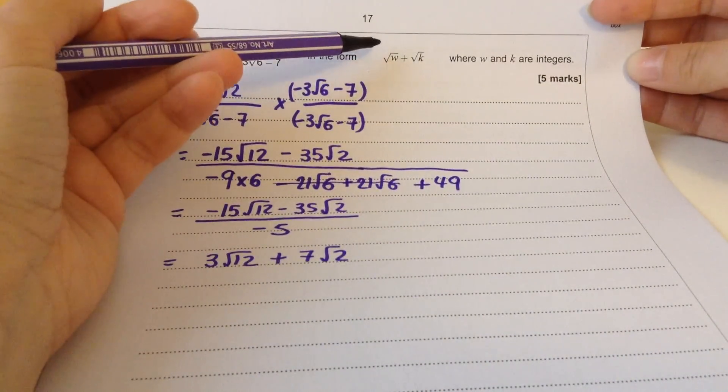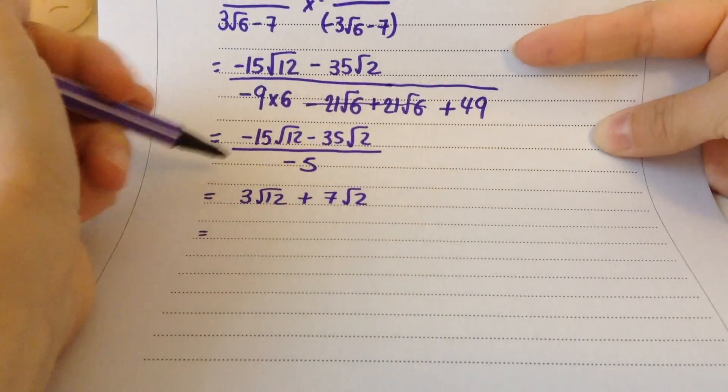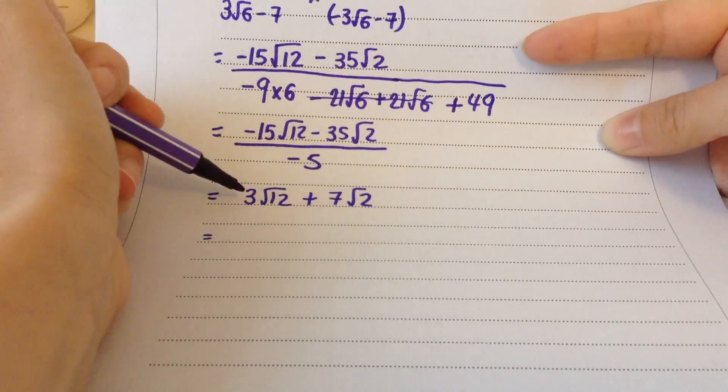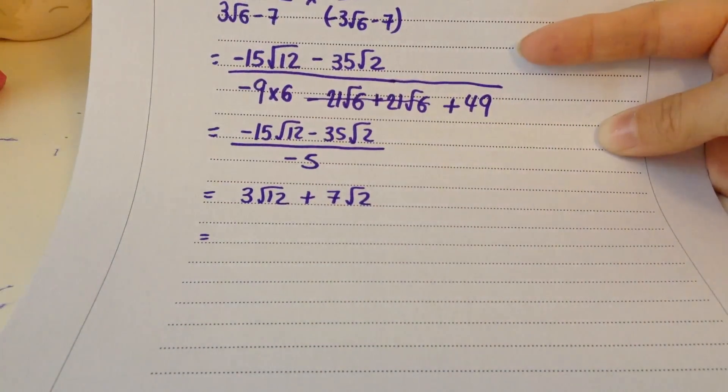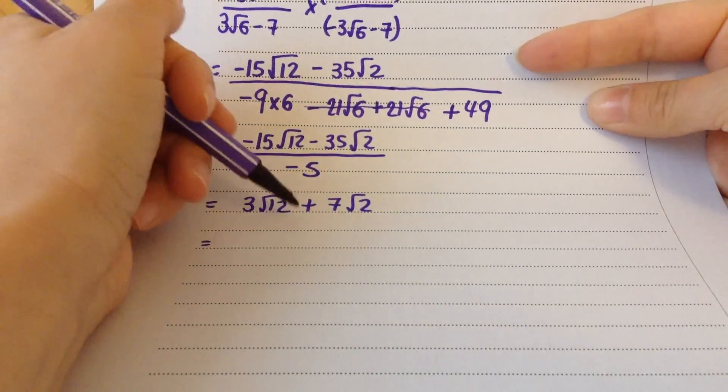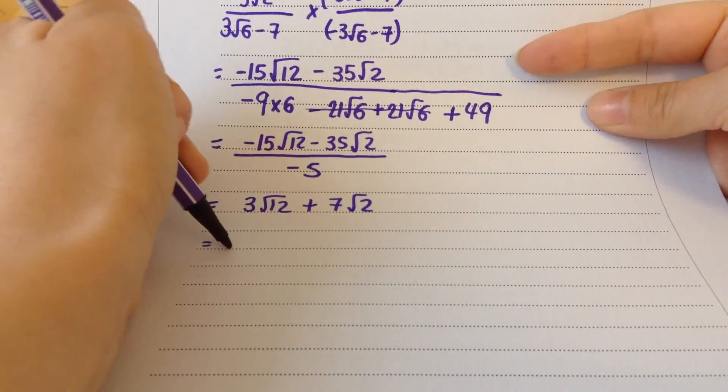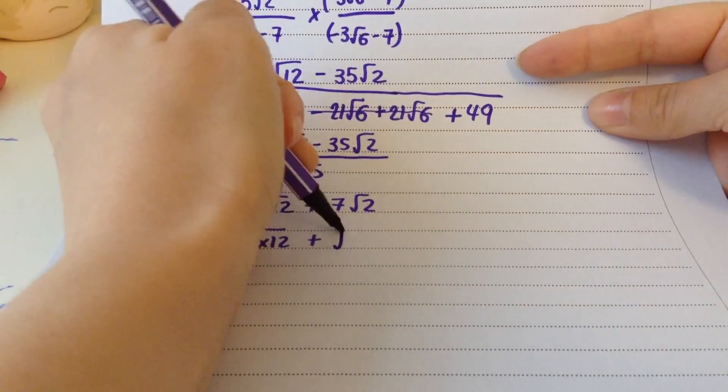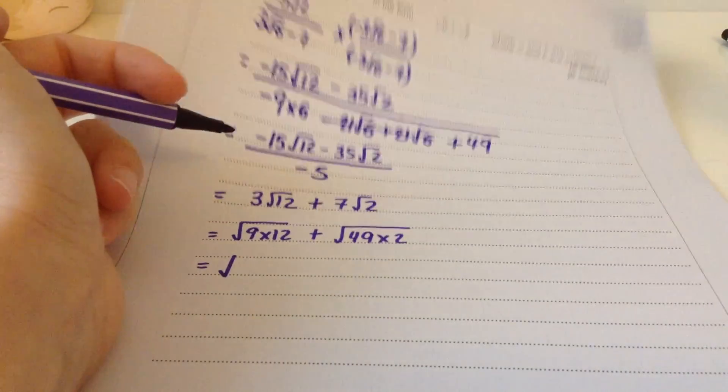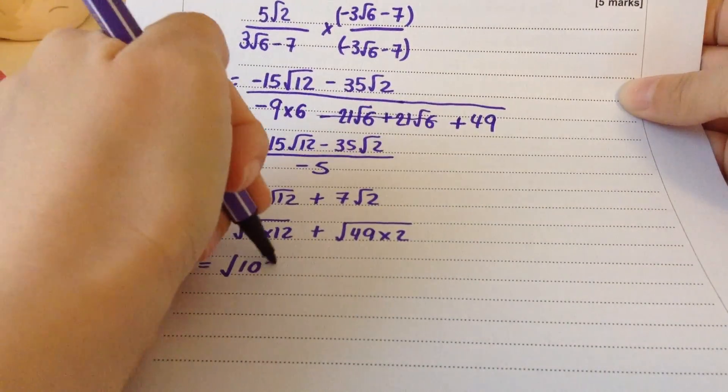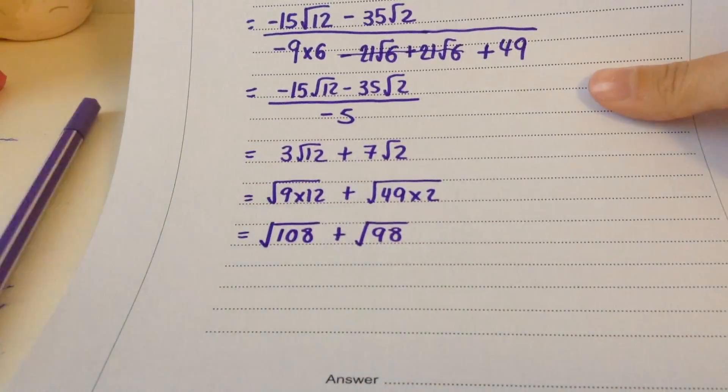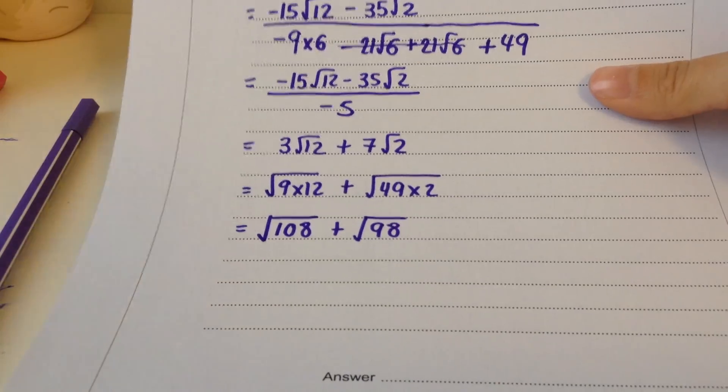So I've got minus 15 root 12 minus 35 root 2 over minus 54 plus 49, which is minus 5. That's good because that's going to cancel. That's going to make that 3 root 12 plus 7 root 2, because I divided everything by minus 5. It doesn't want any numbers on the outside. So if I take this 3 inside the square root, I'm going to have to square it to compensate. When you take a number out of a surd, you square root it, so if I'm doing the opposite and putting something back inside, I have to square it. So I'm going to put 9 inside there, then 49 inside there. I think it's 108, and that's 98. So that would be the answer.